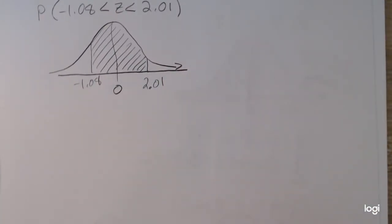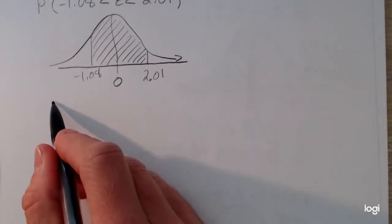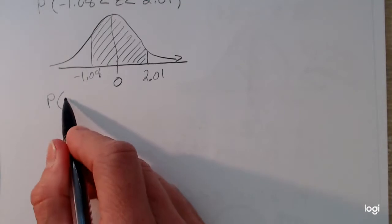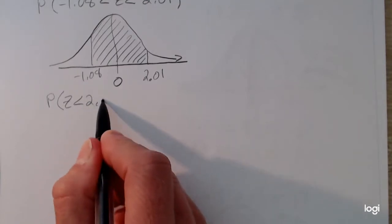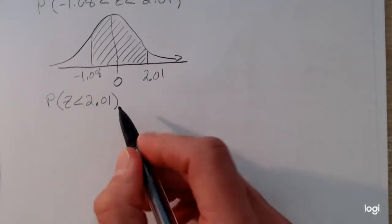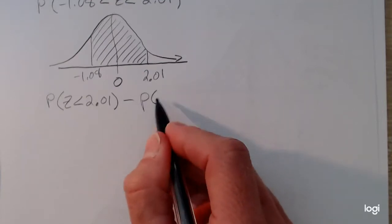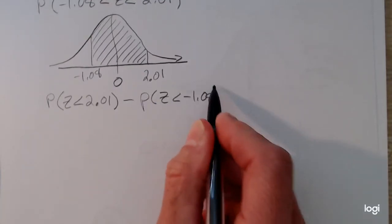So to use the standard normal table, I have to use this twice. Okay, so I need to first find the probability z is less than 2.01. And then I need to subtract out the probability z is less than negative 1.08.